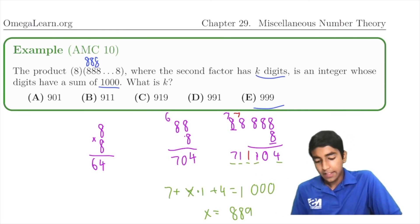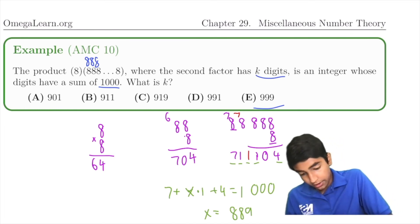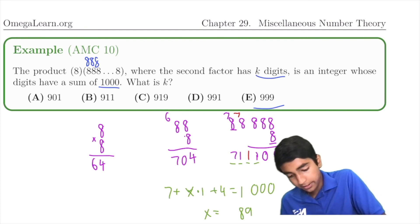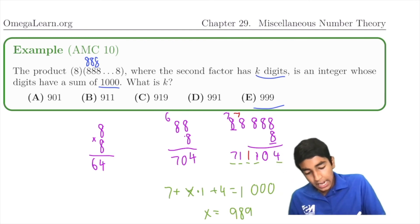Well, then what is k? The key thing is there's 989, because 1000 - 11. So there's 989 ones over here. So then how many 8s do we have?